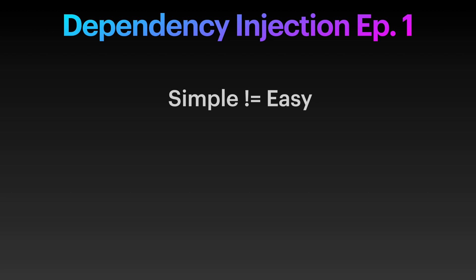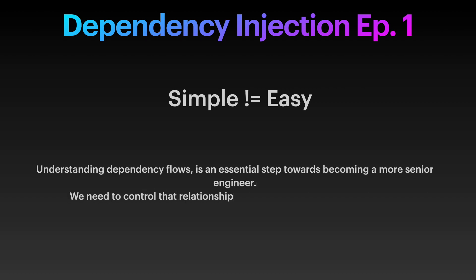A couple videos back, we went over the term dependency — what it is and why we call it that. I will link the video in the description in case you want to go back and refresh your memory. Understanding dependencies between your classes and modules is a super essential step that will level you up as a software engineer. Most developers simply write code that wires together classes, and they happen to have a relationship that is not controlled. We need to learn how to control that power to our advantage.